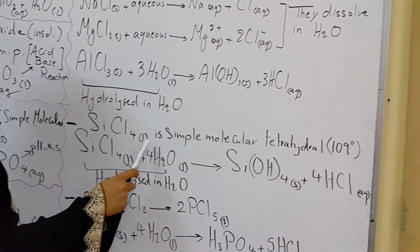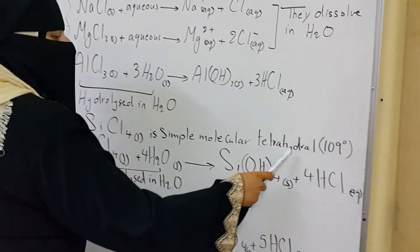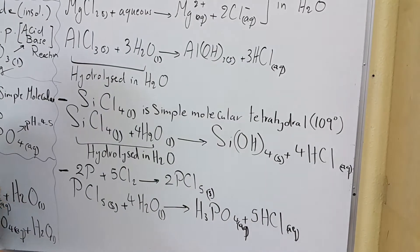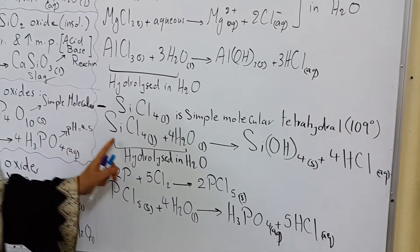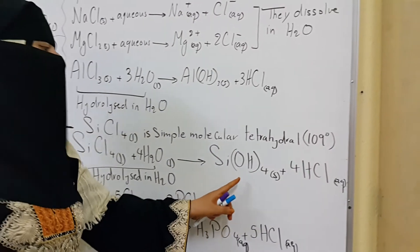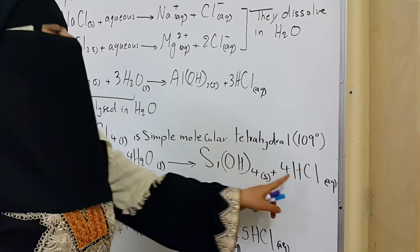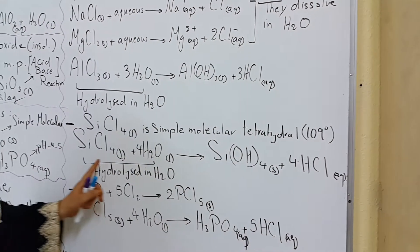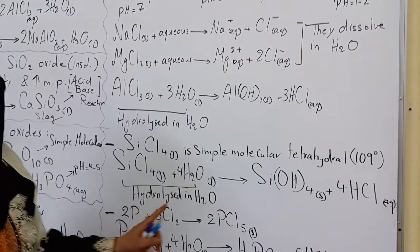Silicon tetrachloride is a liquid which has a simple molecular tetrahedral structure of a bond angle equal 109 degrees. Silicon tetrachloride hydrolyzed in water to give silicon hydroxide insoluble solid and HCl, so the solution here is strongly acidic of pH also 1 to 2.